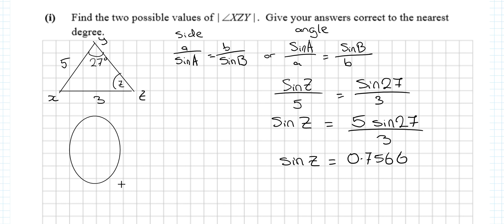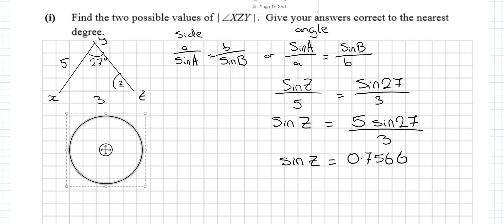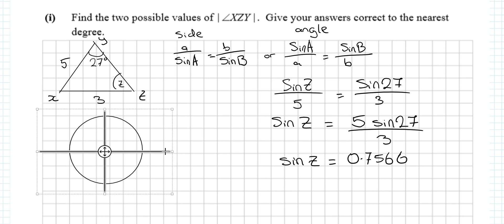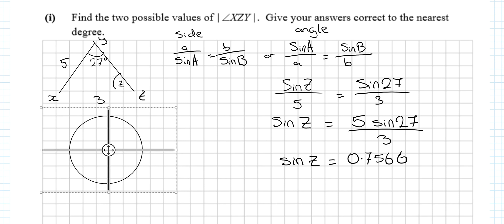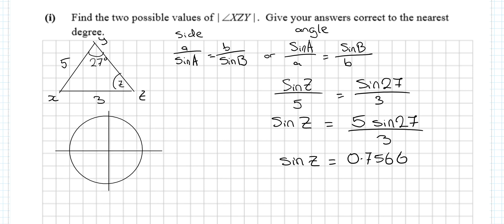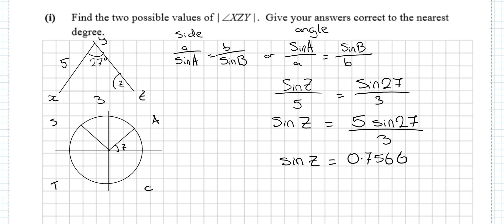What we're looking for is where sine is positive. It's peculiar that we have to consider the unit circle when dealing with triangles, but it's very important. Sine is positive in two quadrants, so angle Z could be in the first quadrant or it might also be in the second quadrant.